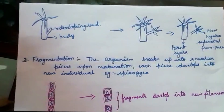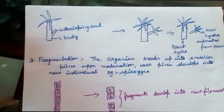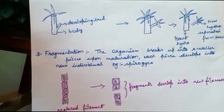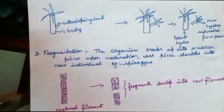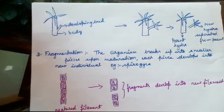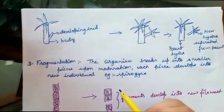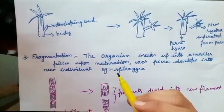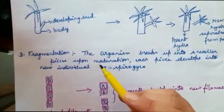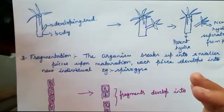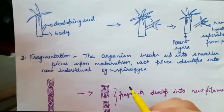Hello students, in this video we are continuing with modes of asexual reproduction. In the last video we discussed that there were two types of reproduction: asexual and sexual. We discussed budding — from the matured part of body in lower organisms, some bulge called a bud arises, which on maturation gets separated. We took examples of yeast and hydra.